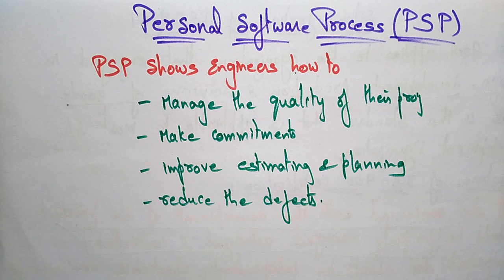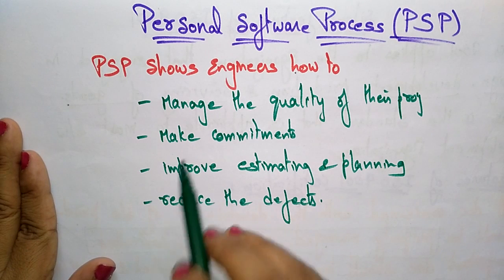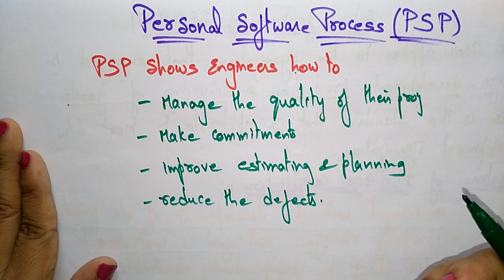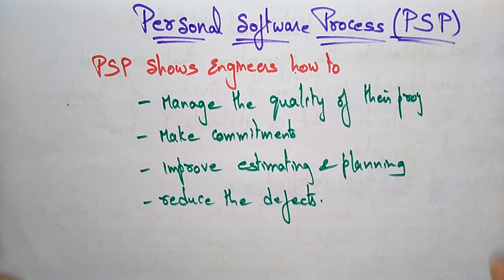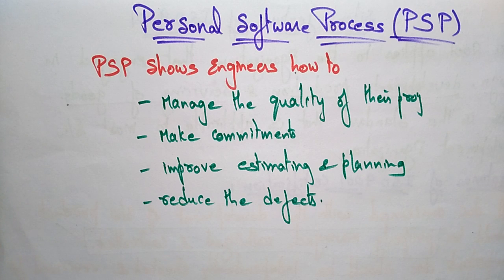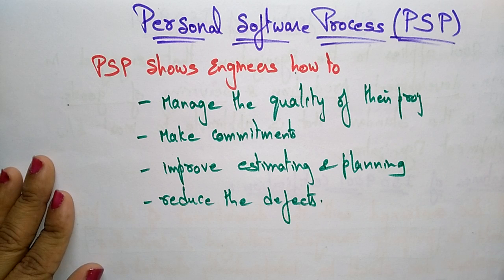Personal means it is related to the person who is implementing the project. They have to manage the quality of their project, take care of commitments, think about how to improve estimating and planning, and consider how to reduce defects in their products — all while designing the product or process.